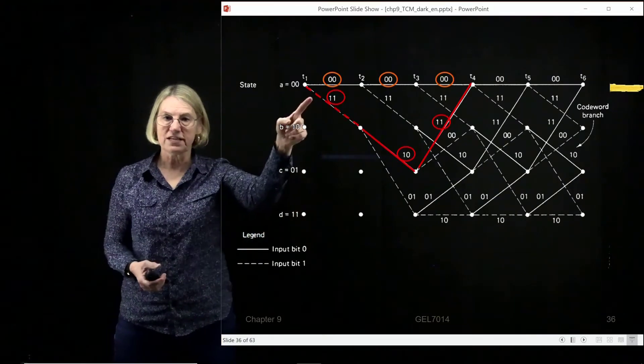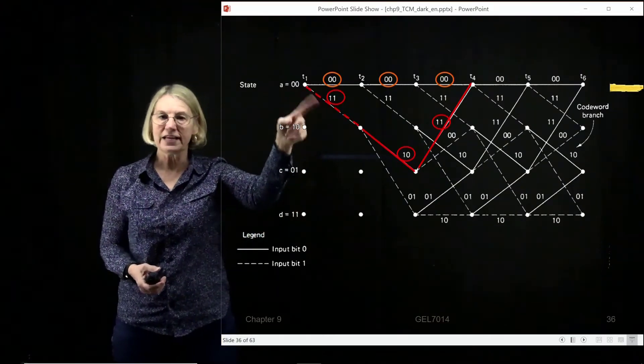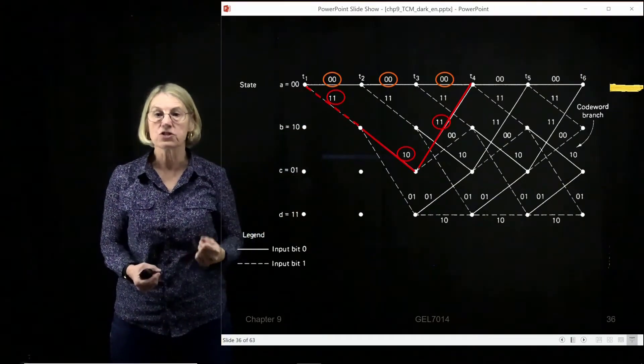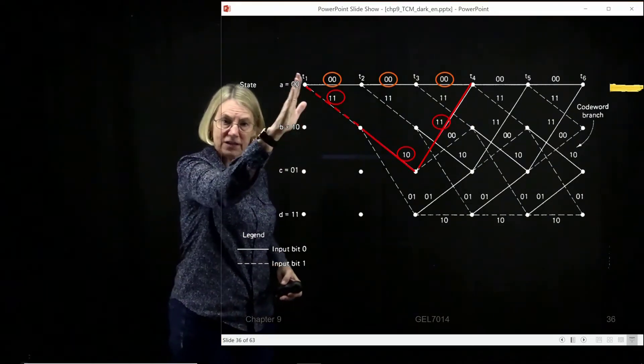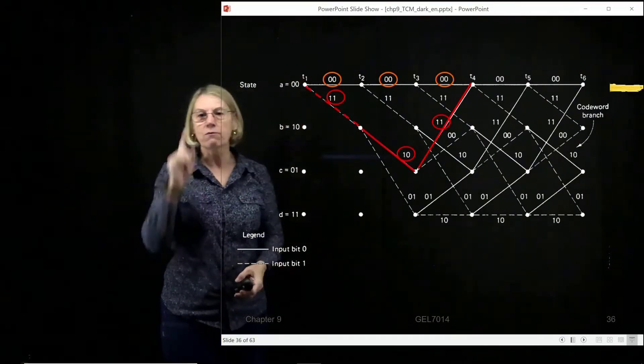Because each one of these should really have another bit to it, the uncoded bit. These are the two coded bits, and I should add a first bit.